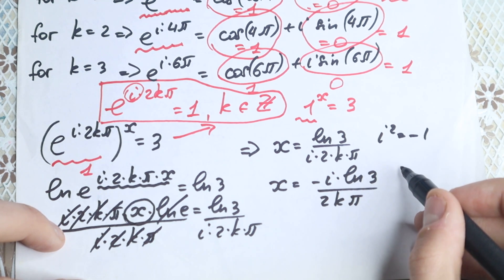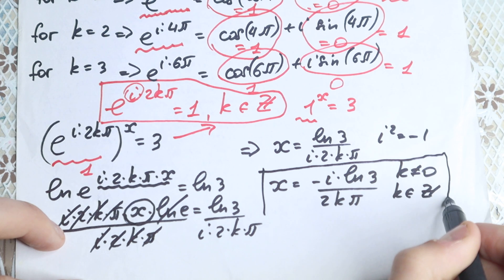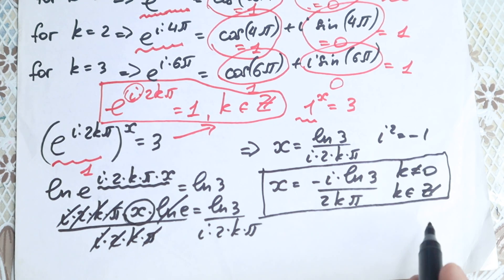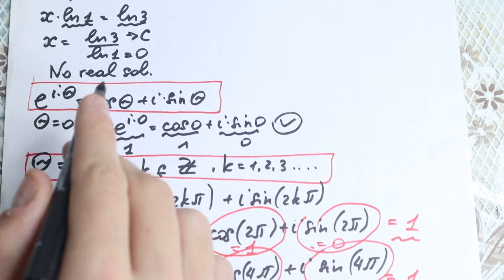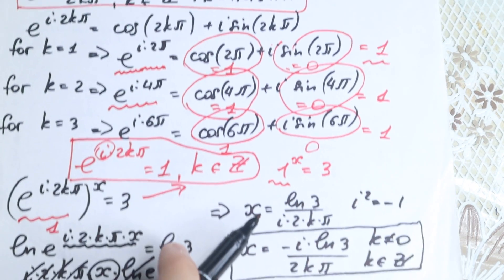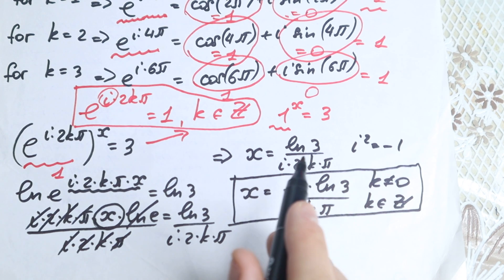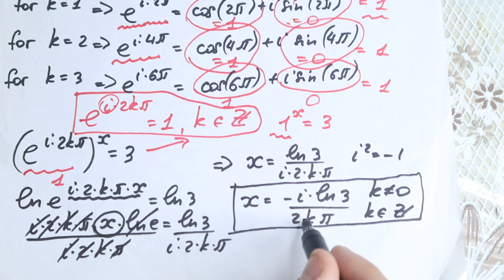Of course, this is not a fully general solution — k cannot equal zero, and k must be an integer. When k is a non-zero integer, we have this complex root. But what about when k is a real number? We don't know about that — there may be many more roots there.